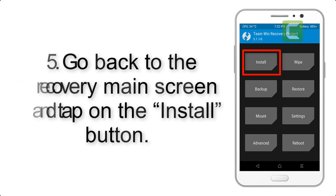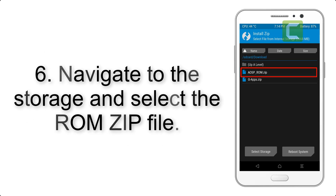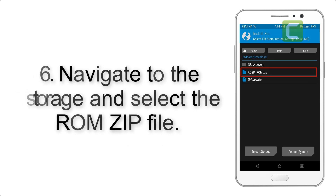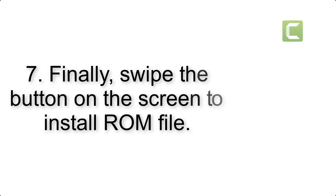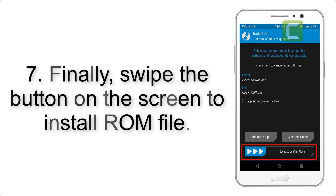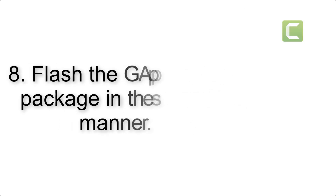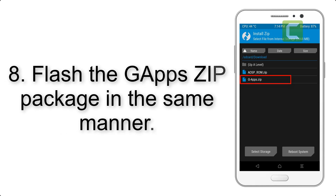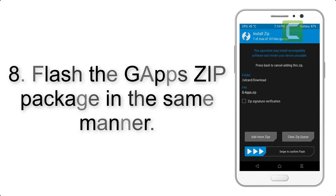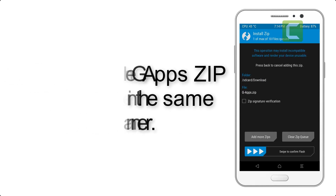Step 6: Navigate to the storage and select the ROM zip file. Step 7: Swipe the button on the screen to install the ROM file. Step 8: Flash the GApps zip package in the same manner.